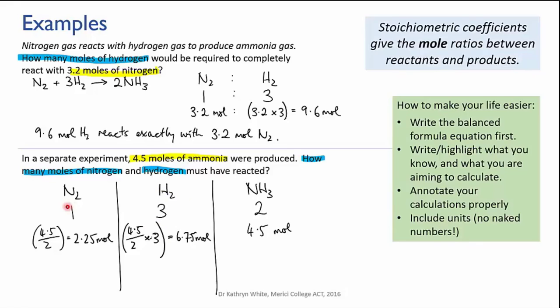As a double check, you can see that there should be three times as much hydrogen as nitrogen, because the ratio of hydrogen to nitrogen is three to one. And 2.25 times three does equal 6.75 moles. So we're good.